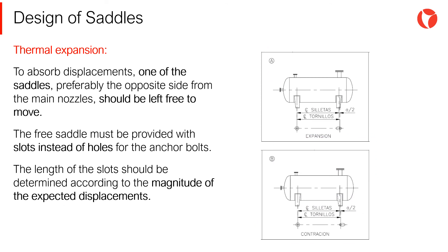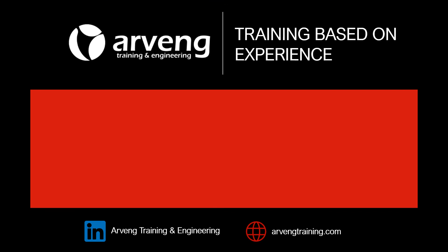A pressure vessel operating at high temperature would suffer thermal expansion. To absorb this displacement, one of the saddles — preferably the one opposite from the main nozzle location — should be left free to move. The free saddle must be provided with slots instead of holes for the anchor bolts. The length of the slots should be determined according to the magnitude of the expected displacements.